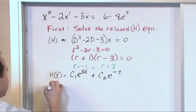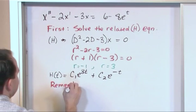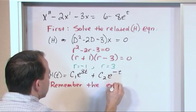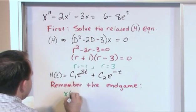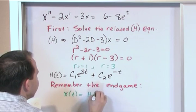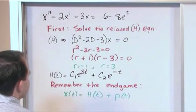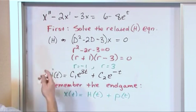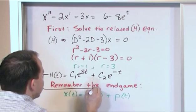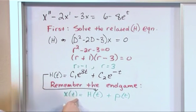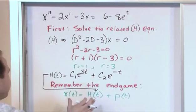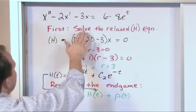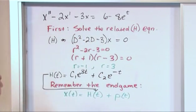Remember where we're going: the total solution of the original non-homogeneous equation is going to equal the solution to the related homogeneous equation plus some particular solution. This homogeneous solution comes right into that total answer. So we've already found half of it — you just set the right-hand side equal to 0, find the roots, construct it, and that's half the answer. This half arises because of how our system is constructed — these derivatives come about based on how you built the thing.